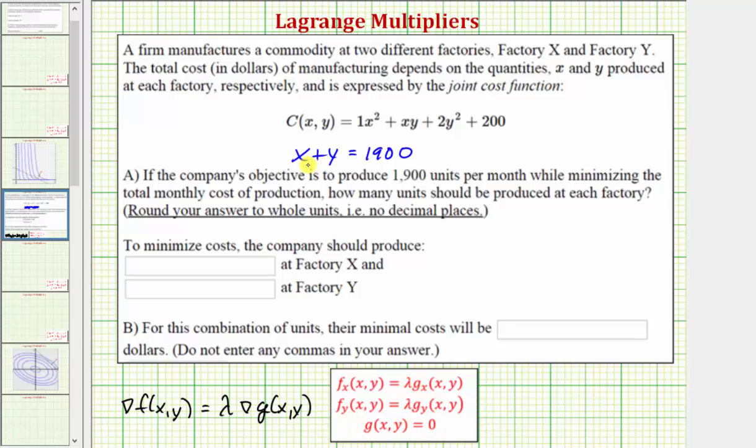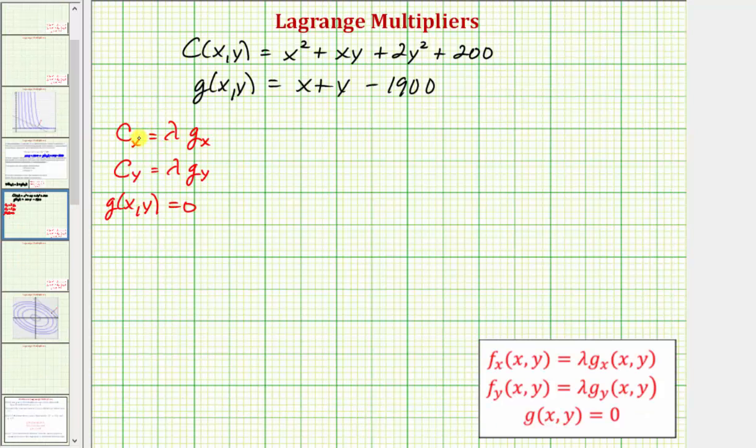So because our constraint is x plus y equals 1,900, we're going to use the function g(x,y) equals x plus y minus 1,900. Let's set up our system of equations on the next slide. So for our first equation, we'll have the partial of C with respect to x equals lambda times the partial of g with respect to x.